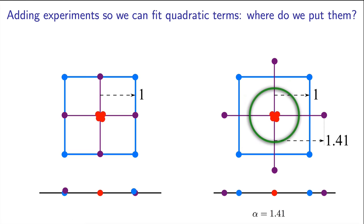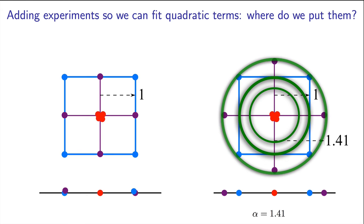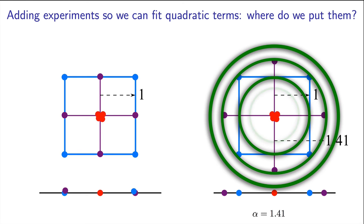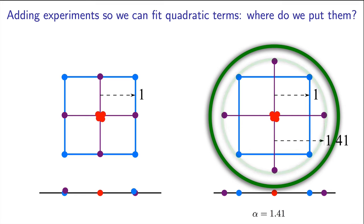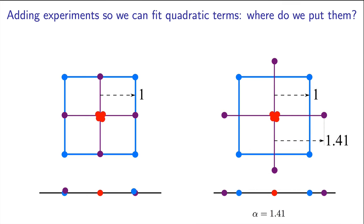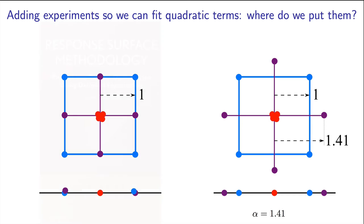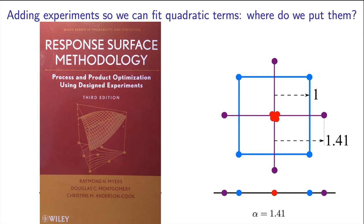Just a quick aside, rotatability simply means that the prediction error is equal for any two points that are the same distance from the centre, and it's a desirable statistical property.